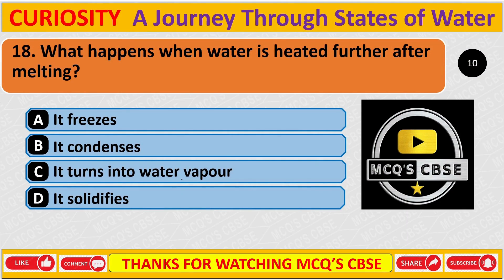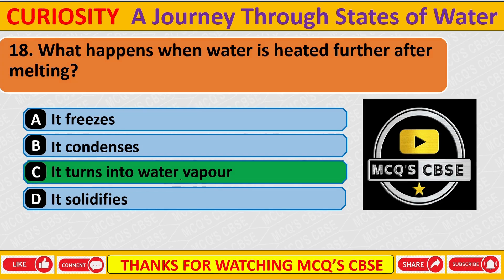What happens when water is heated further after melting? The correct answer is C: It turns into water vapour.